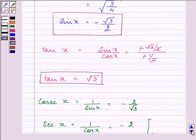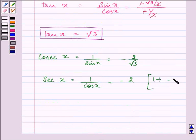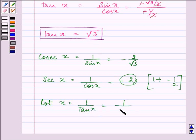Now, sec x will be 1 divided by minus 1 by 2, which on simplification gives us minus 2.